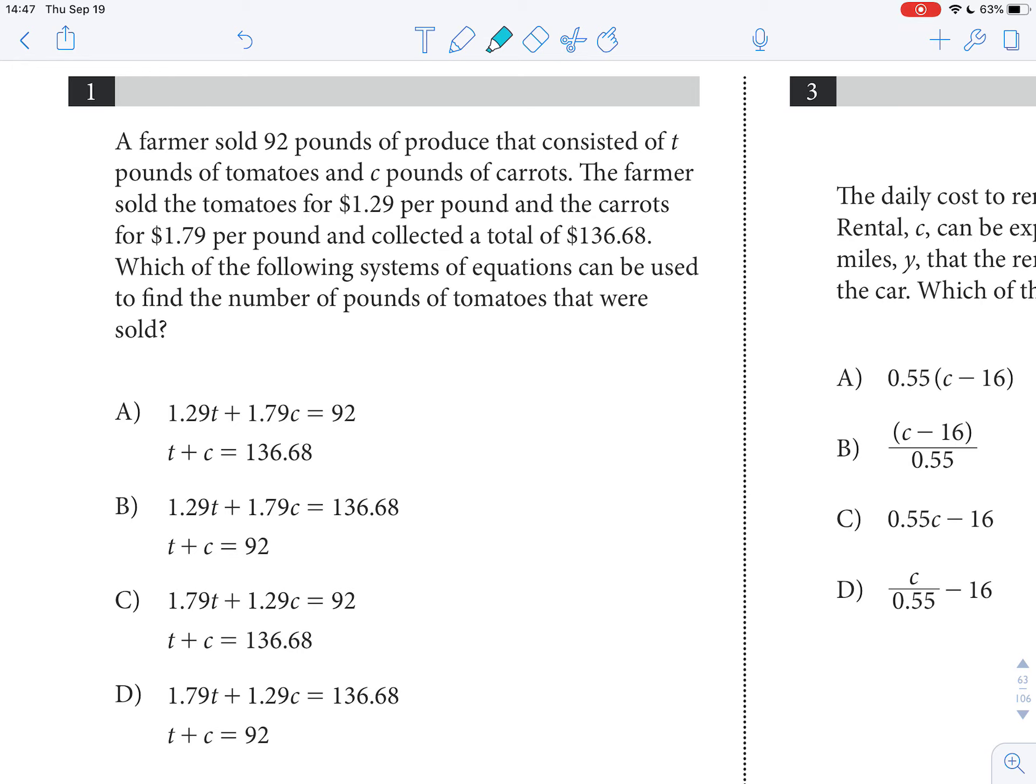The farmer sold the tomatoes for $1.29 per pound and the carrots for $1.79 per pound and collected a total of $136.68.